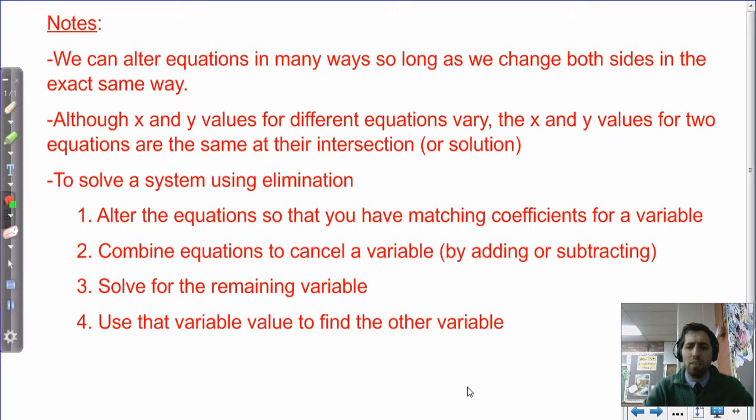And this is something that keeps showing up when we're talking about solutions to systems is because we're interchanging and we're using this equivalence for different variables, and it makes sense only because we're talking about the intersection. So x and y pairs are not always the same for two different equations, but at the solution they are. Finally, we have another four-step process, which is really similar to our substitution process, but it's just some minor changes. So our steps are first going to be to alter the equation so that we have matching coefficients for a variable.